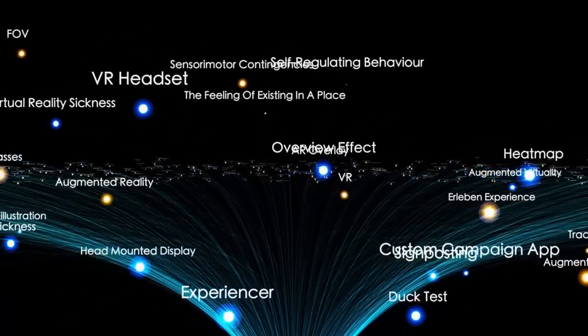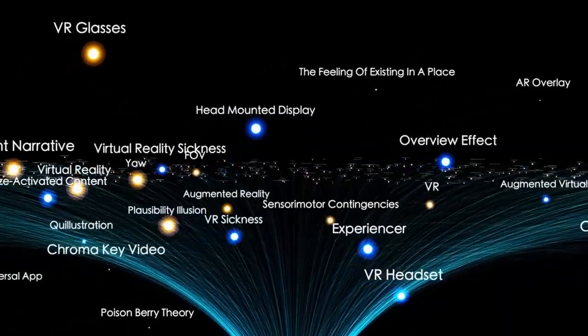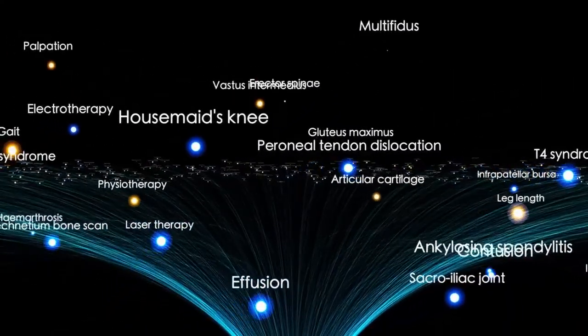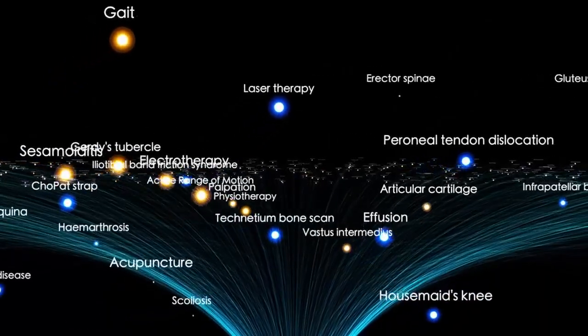Some believe these compounds might be the universal seeds of life, scattered across the galaxy by interstellar travelers like Atlas. If that's true, then we may be looking at one of the ancient couriers of existence itself.